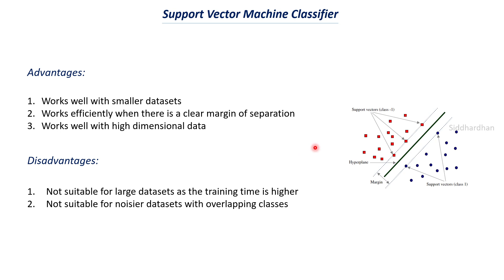To summarize the key takeaways: support vector machine is a supervised learning model mainly used for classification, specifically binary classification, though it can also be used for regression. The two main terms are hyperplane — the line or plane that separates the two classes — and support vectors — the data points closest to the hyperplane. In the upcoming videos we will discuss the math behind the SVM classifier and then build the SVM model from scratch in Python. Thanks for watching.